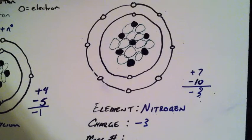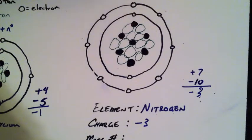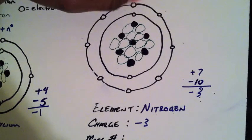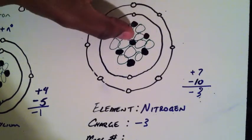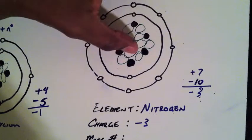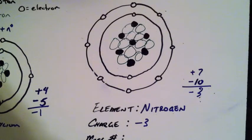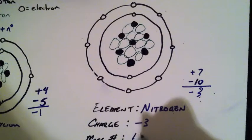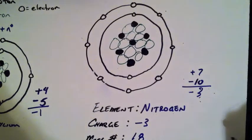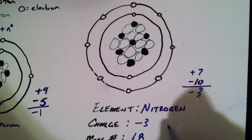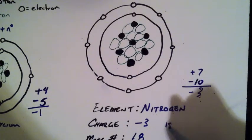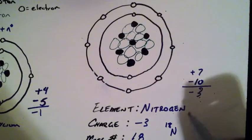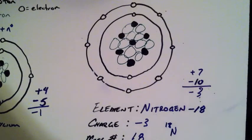My mass number is equal to the number of protons in the nucleus plus the number of neutrons in the nucleus. I already know that I have seven protons, and then I count the neutrons: one, two, three, four, five, six, seven, eight, nine, ten, eleven — eleven neutrons. Seven plus eleven equals eighteen, so I have a mass number of eighteen. I can write this atom as nitrogen-18.